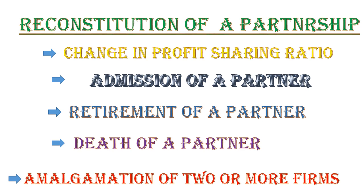Death of a partner means a person in the partnership has passed away. The situations and calculations are mostly the same as in retirement. The one difference is: in retirement, the outgoing partner is alive, but in death of a partner the person is not alive, so their amount goes to their legal heirs — that is, nominees or executors. The firm will prepare an executor's account for this purpose.